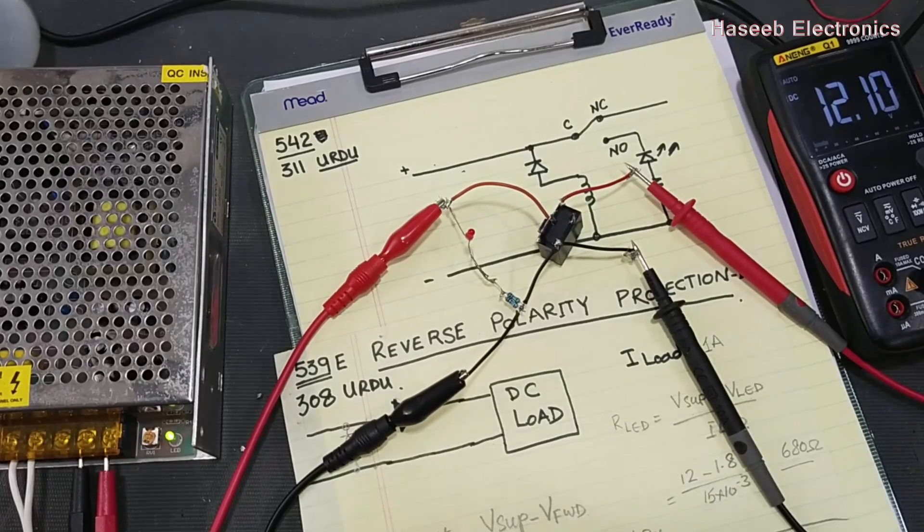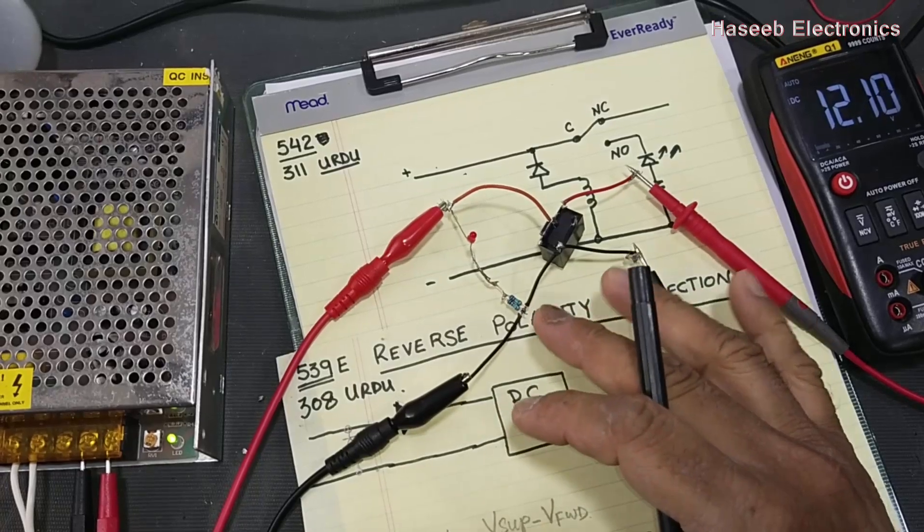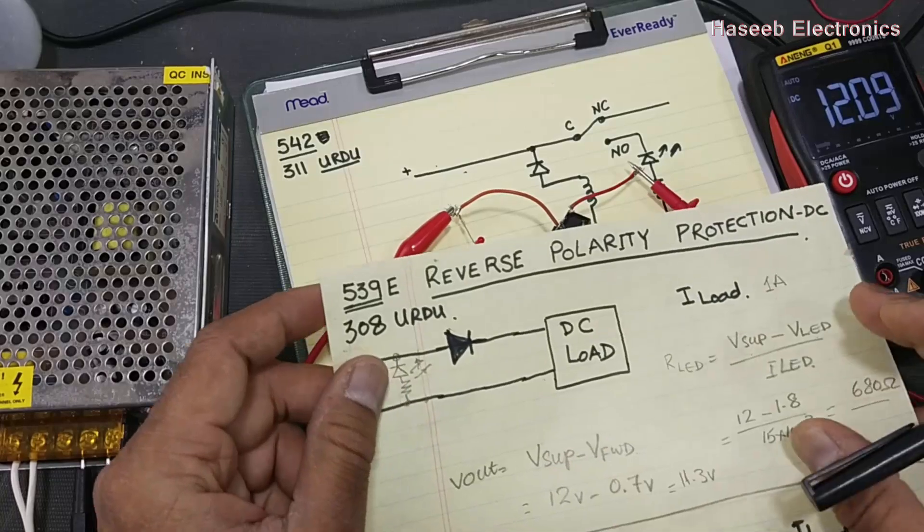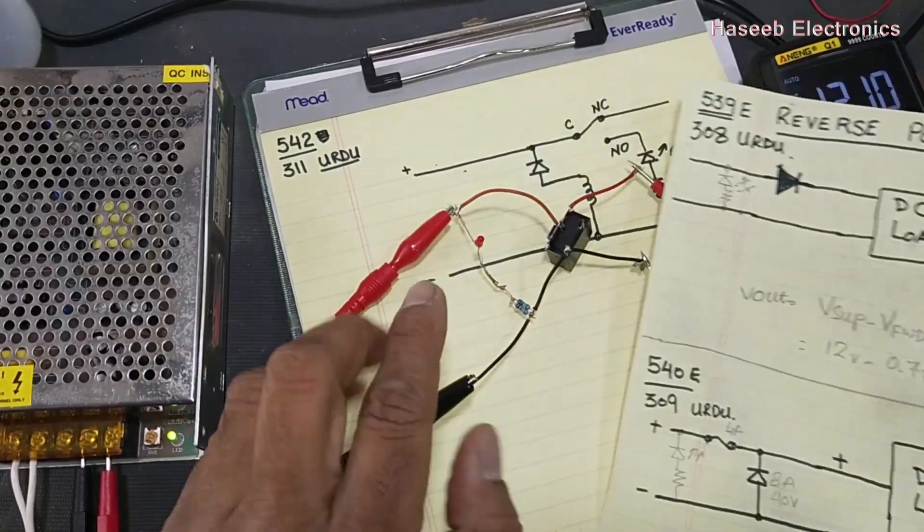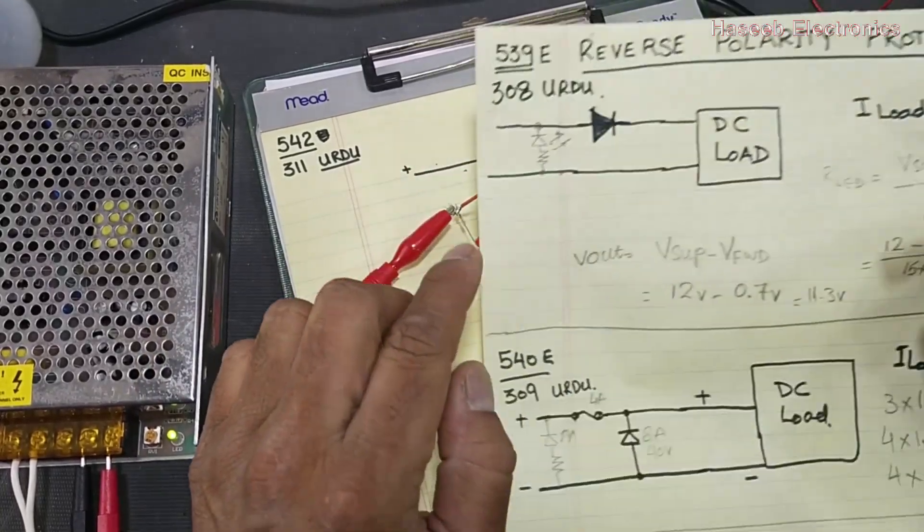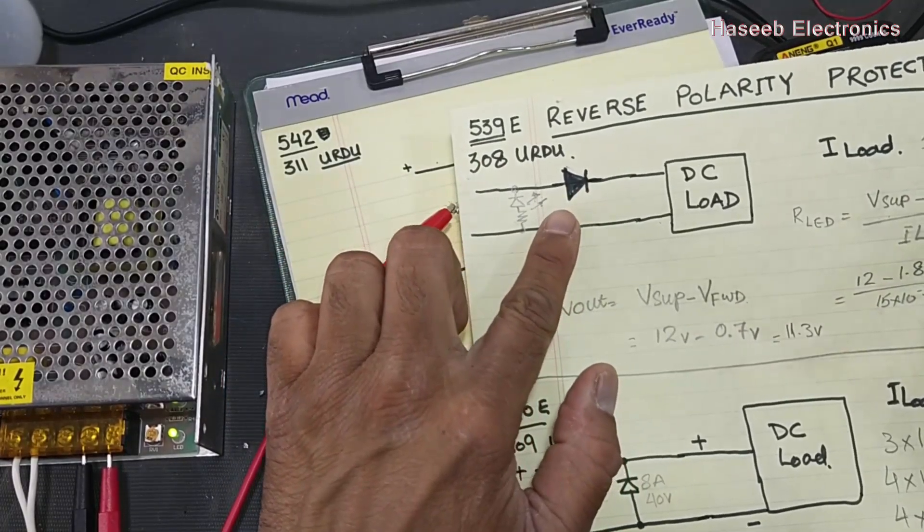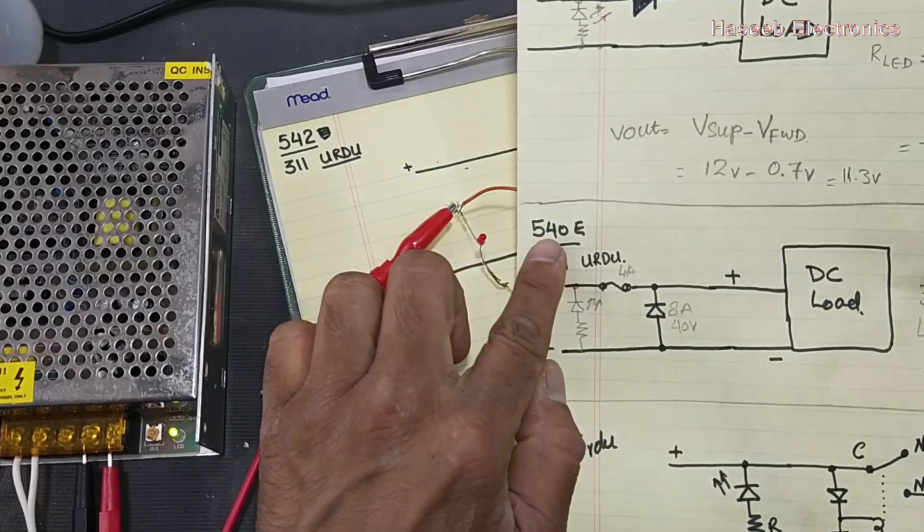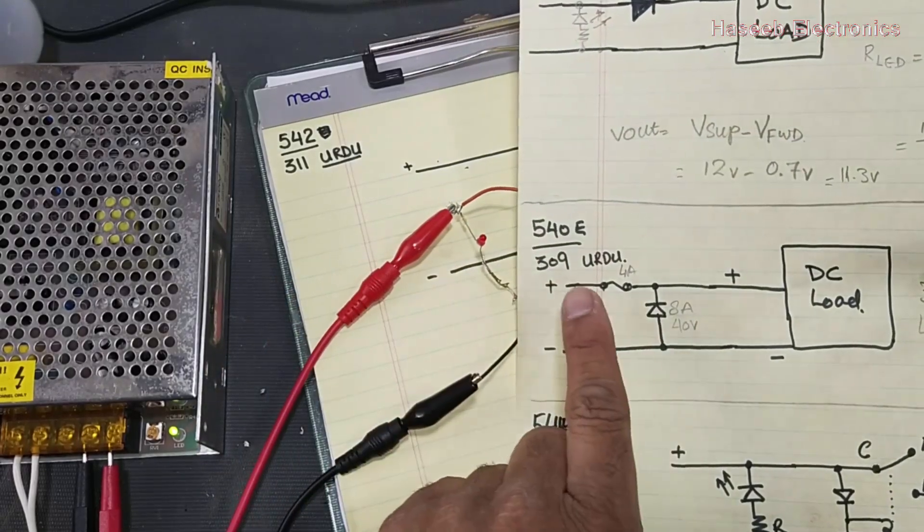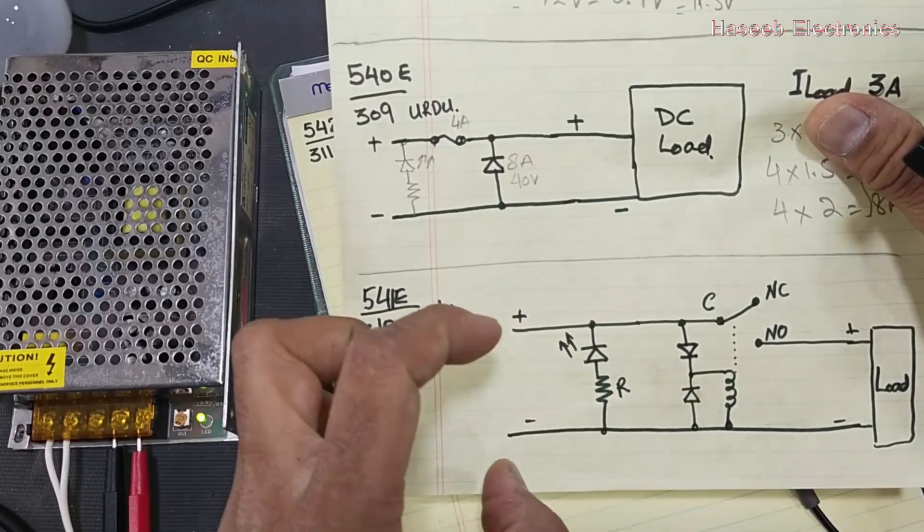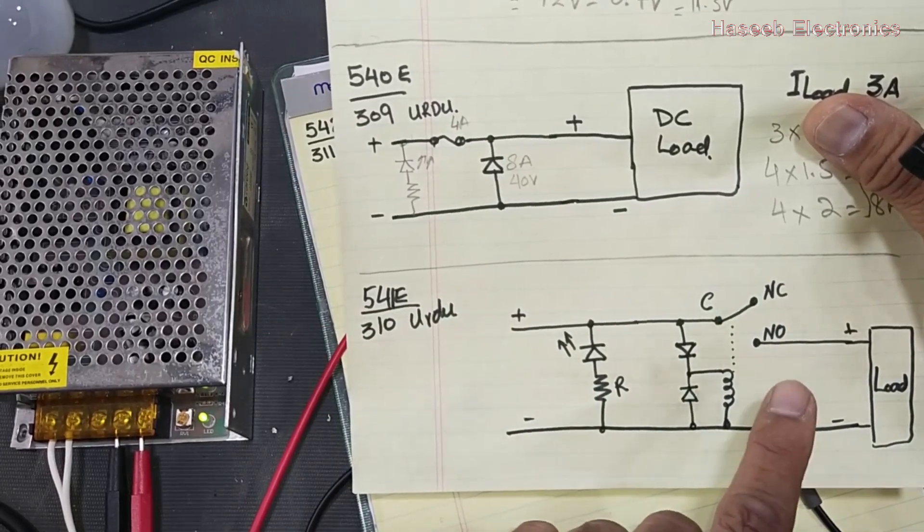Welcome back to my channel. In this video, we are discussing DC reverse polarity protection. This is our fourth video. In video 539, part one, we used a simple rectifier diode. In video 540, we used a diode as a shunt. In video 541, we connected a relay, and this relay will operate when the polarity is perfect. When it is reverse polarity, it will remain off.